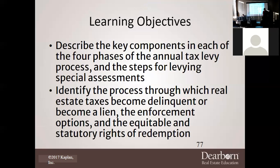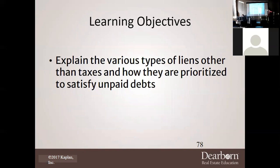We'll further describe the key components in each of the four phases of the annual tax levying process and the steps for levying special assessments. We'll identify the process through which real estate taxes become delinquent or become a lien, the enforcement options, and the equitable and statutory rights of redemption. Lastly, we'll explain the various types of liens other than taxes and how they will be prioritized to satisfy unpaid debts.